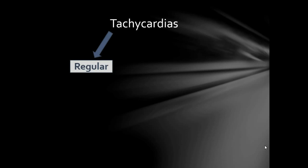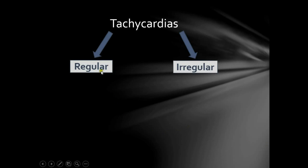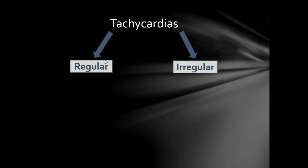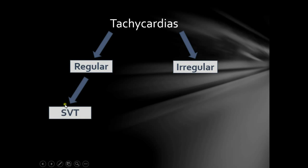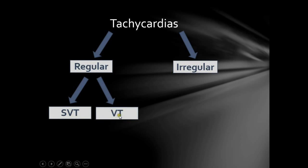Tachycardias are classified as regular and irregular. Regular means that the RR interval is constant and not changeable. Irregular means that the RR interval is changeable. The regular tachycardias discussed in this video are further classified based on the site of the firing focus into SVT — supraventricular tachycardia — and ventricular tachycardia.